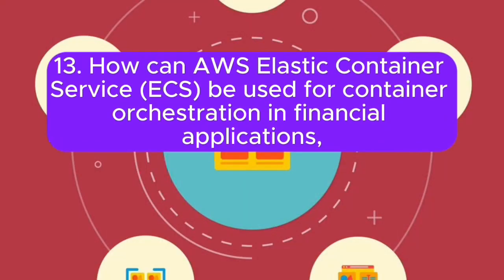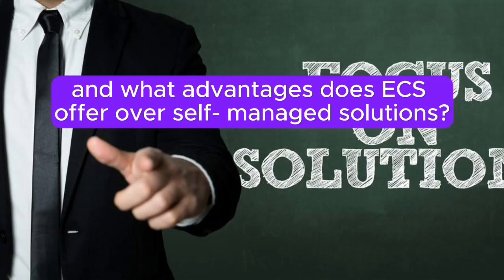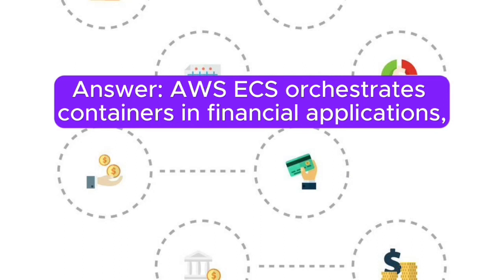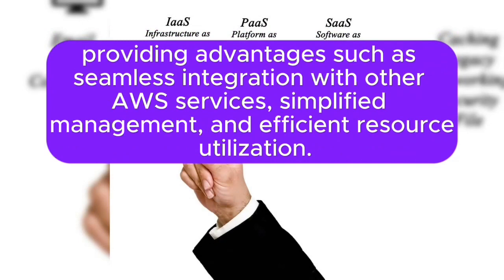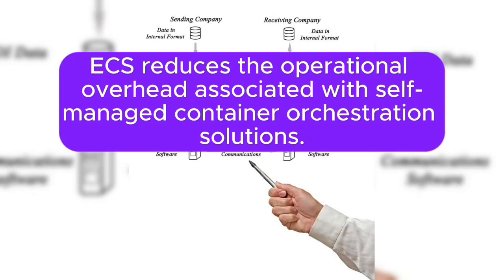Question 13: How can AWS Elastic Container Service (ECS) be used for container orchestration in financial applications, and what advantages does ECS offer over self-managed solutions? Answer: AWS ECS orchestrates containers in financial applications, providing advantages such as seamless integration with other AWS services, simplified management, and efficient resource utilization. ECS reduces the operational overhead associated with self-managed container orchestration solutions.